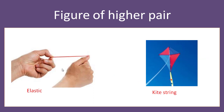For better understanding, I have taken two examples. First is an elastic band - the elastic band we normally use. Next is a kite string - the string we use to control a kite.